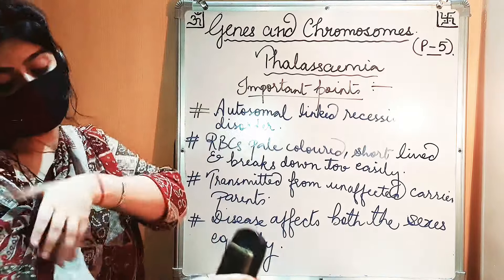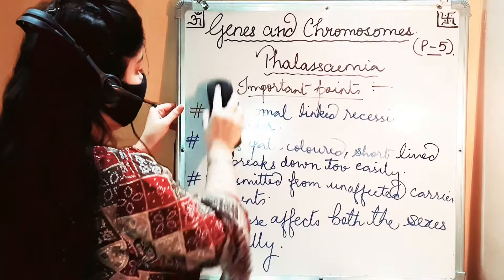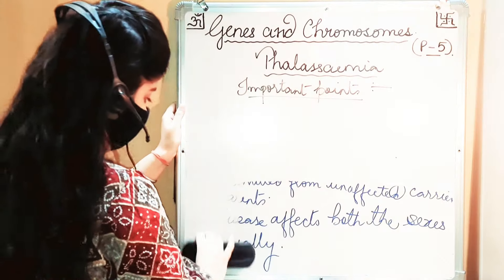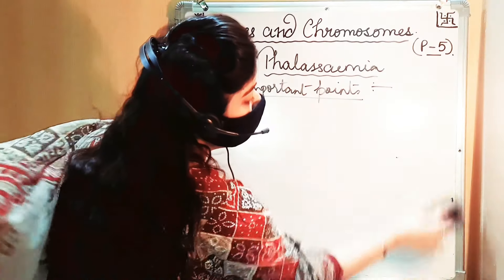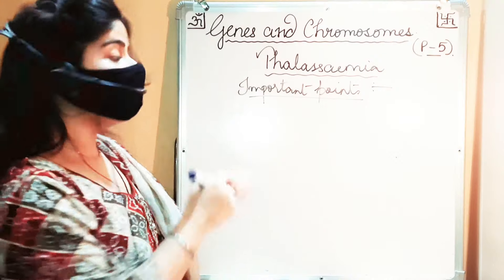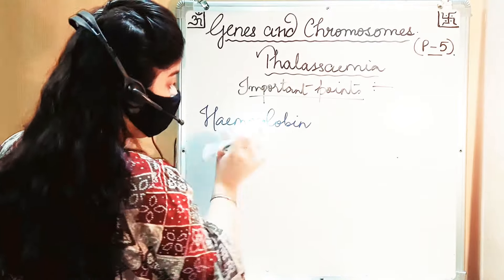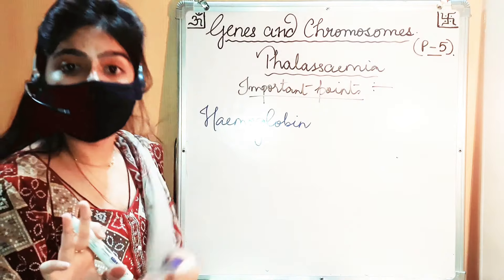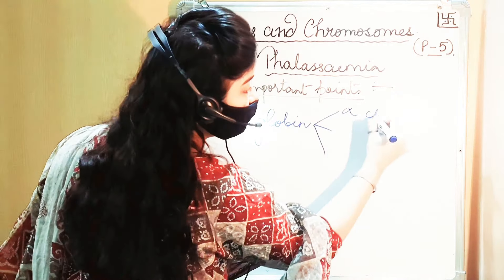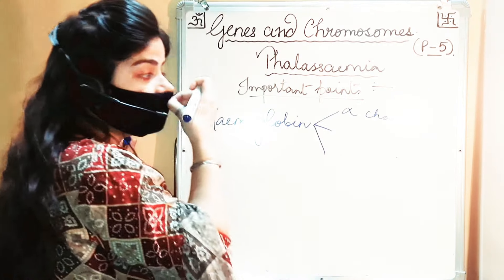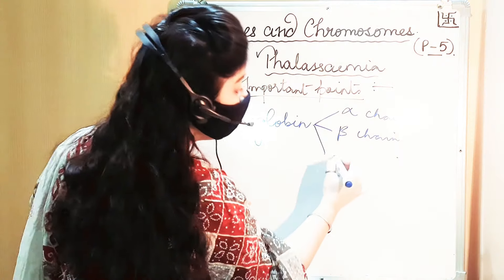We have learned from class 10 that RBCs carry hemoglobin, which is a colored pigment. Hemoglobin is composed of three kinds of chains: alpha chain, beta chain, and gamma chain — or we can say alpha globin chain, beta globin chain, and gamma globin chain.